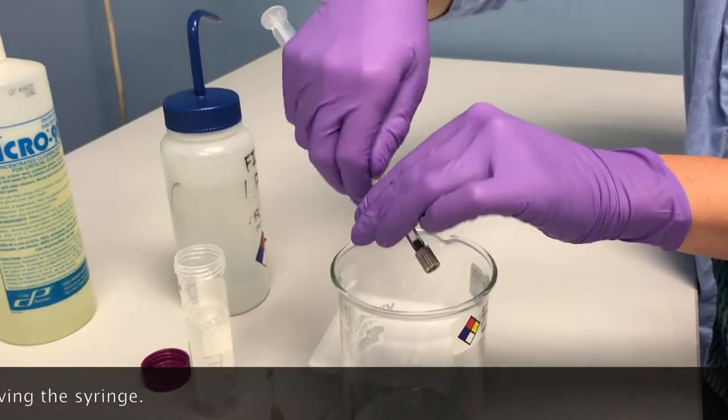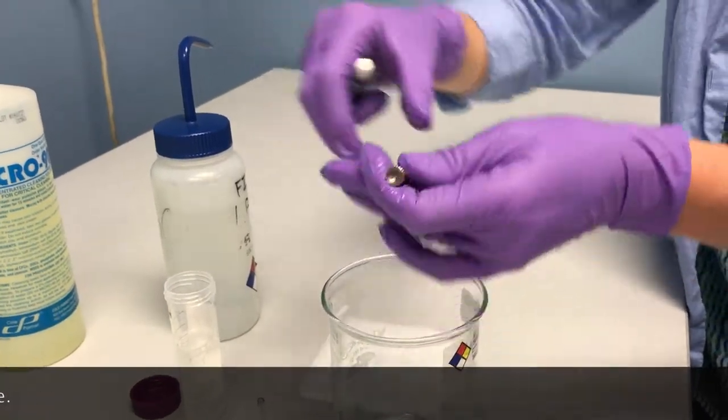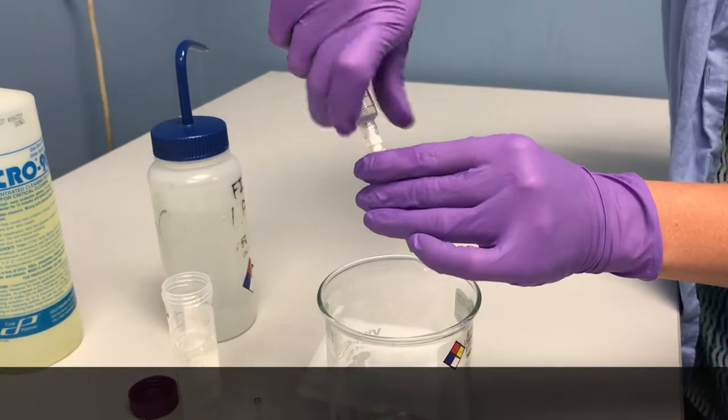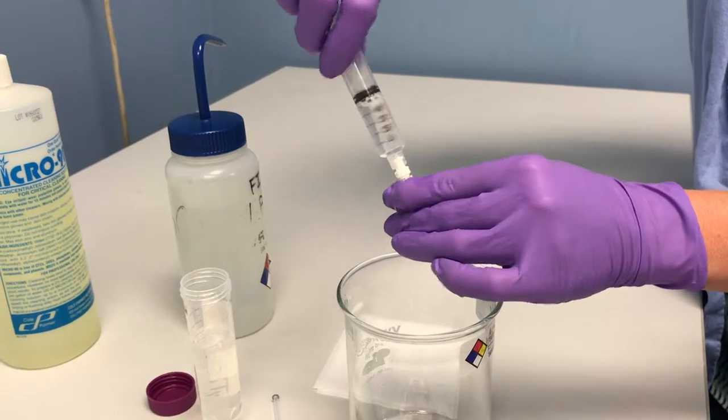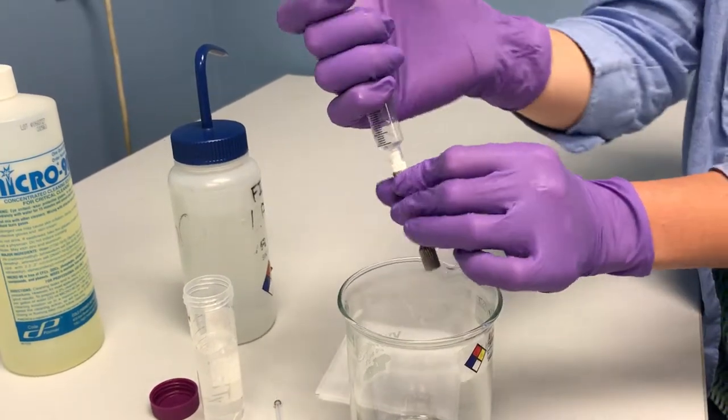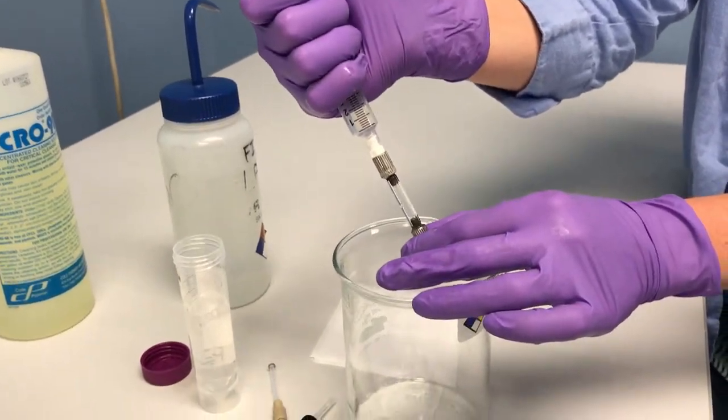You can also clean the alternative way by turning your flow cell and reconnecting your luer lock fitting and running cleaner solution through.